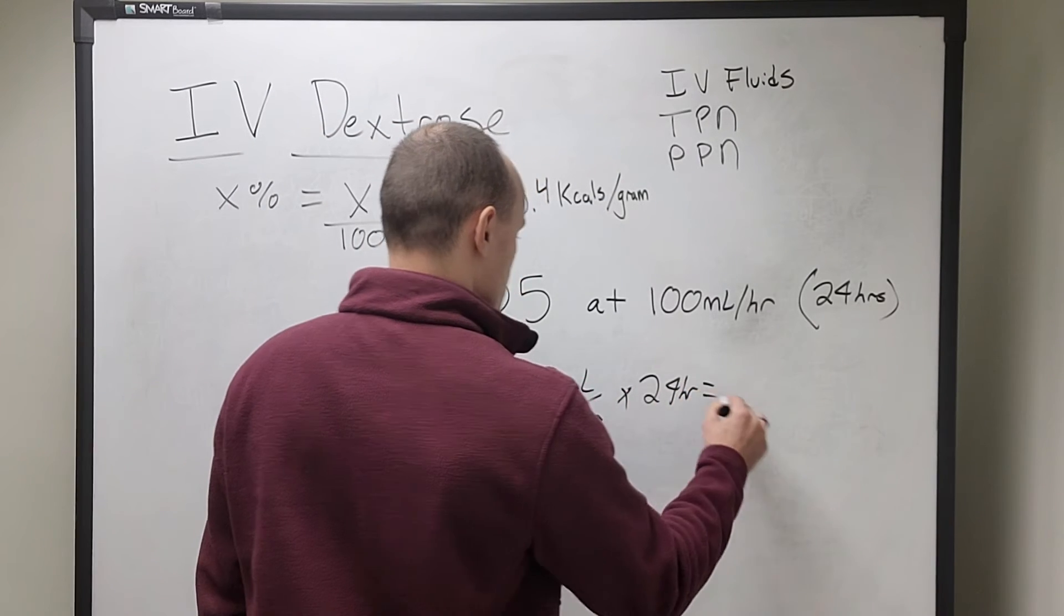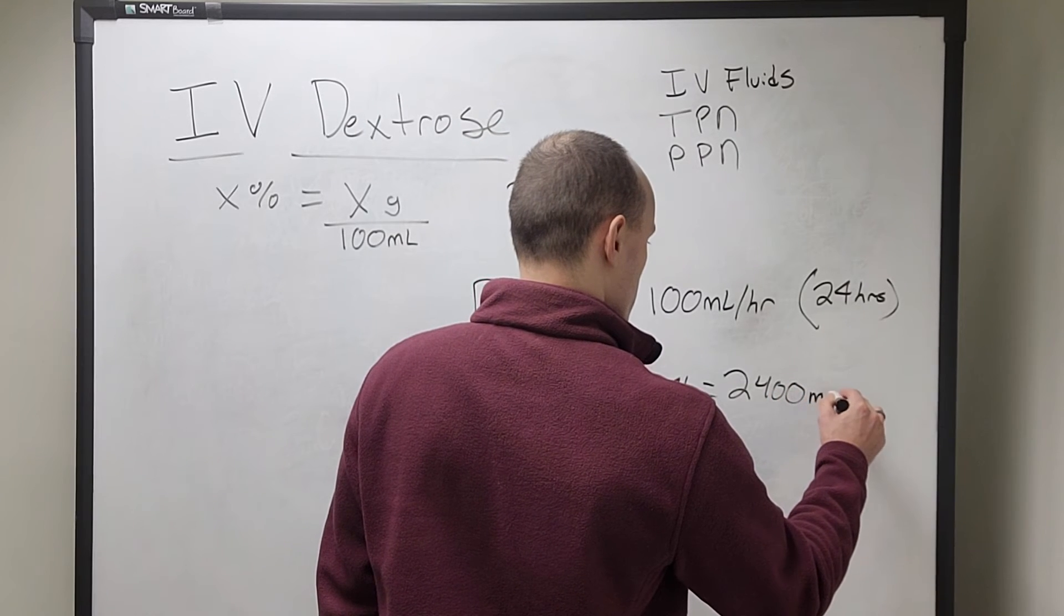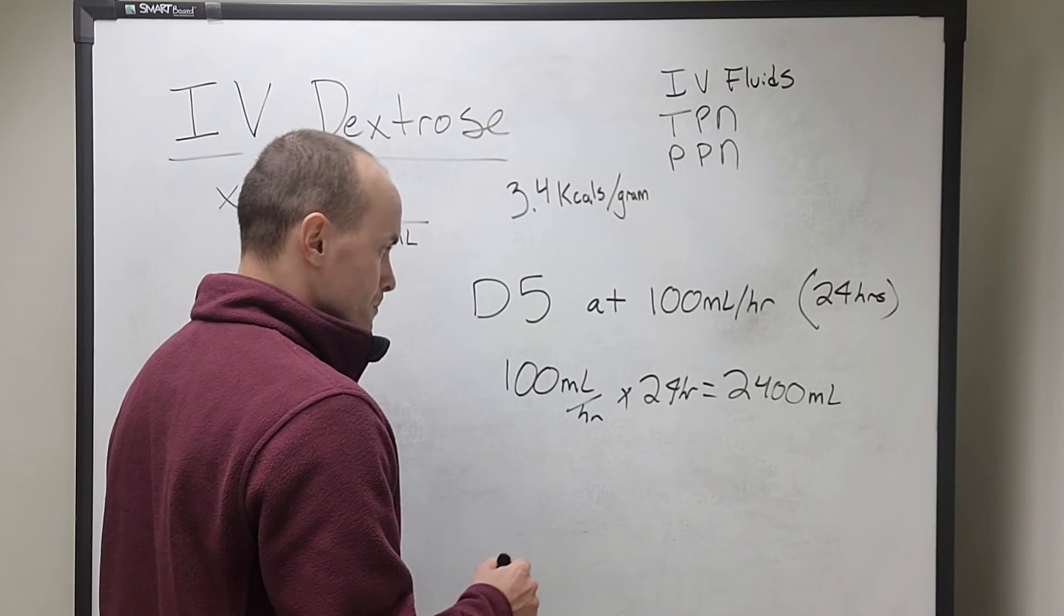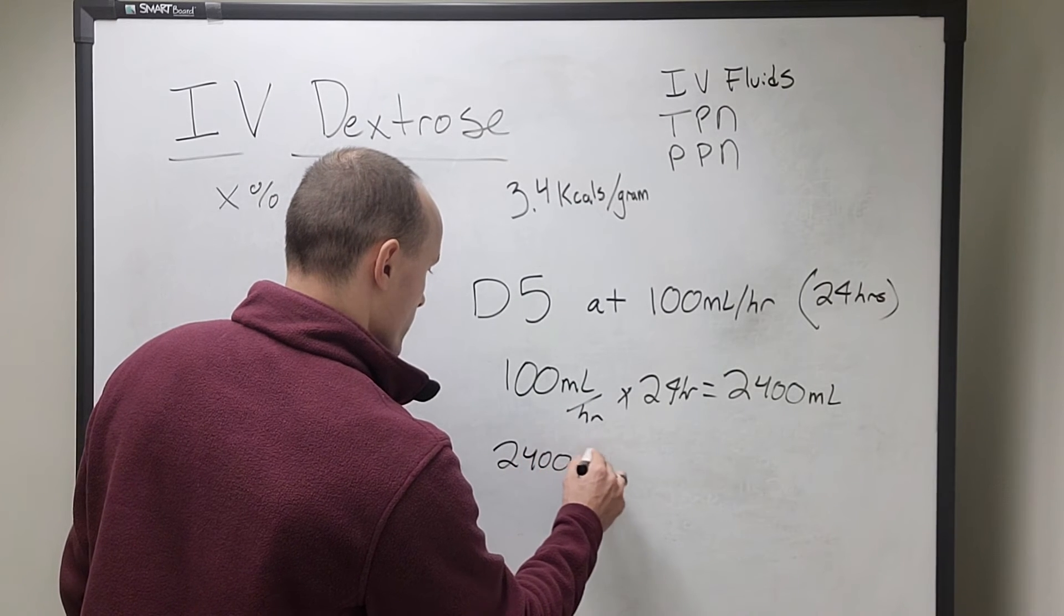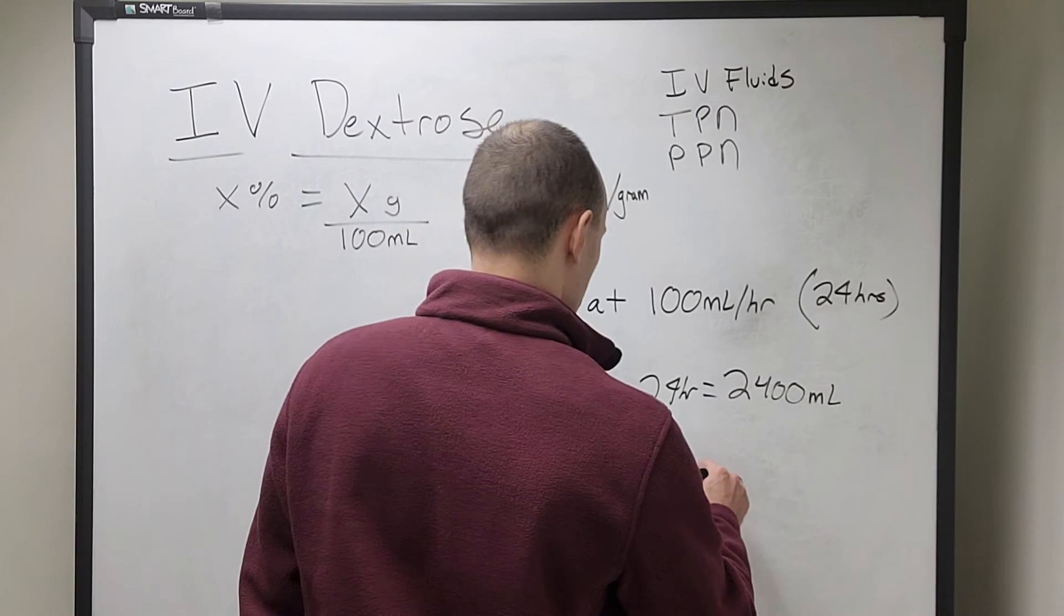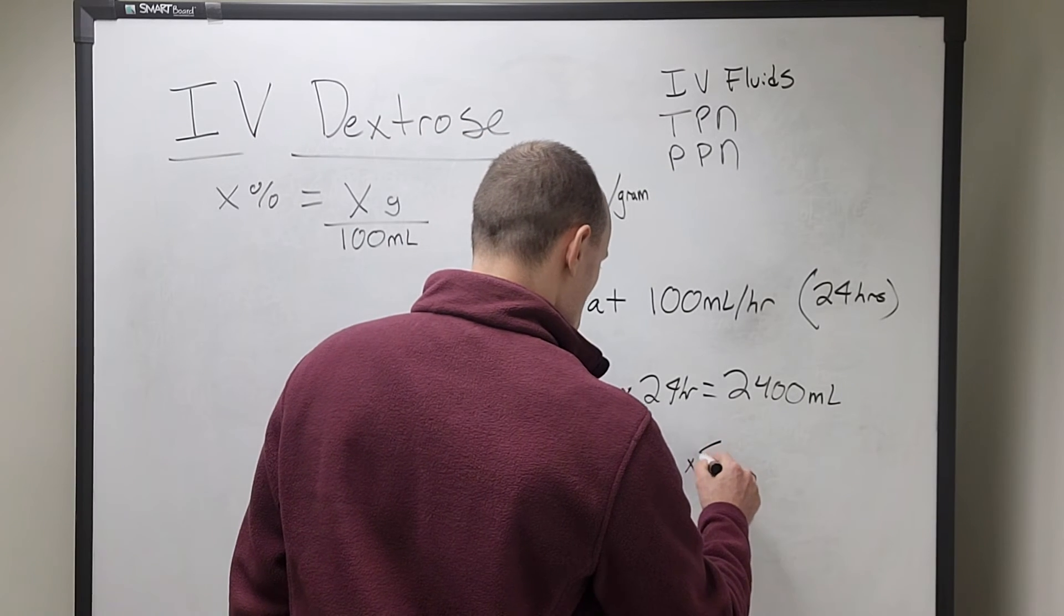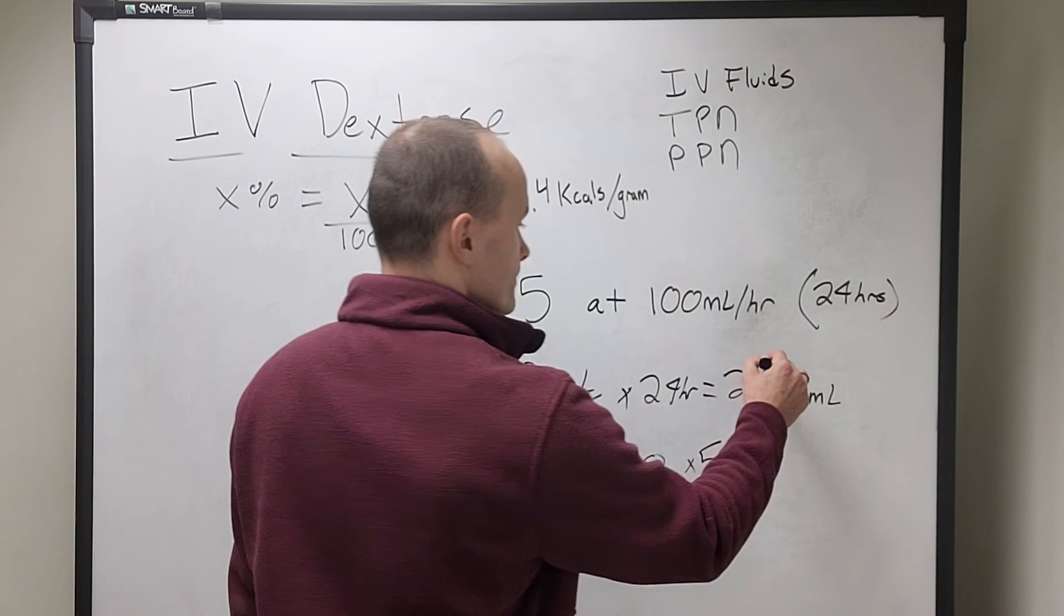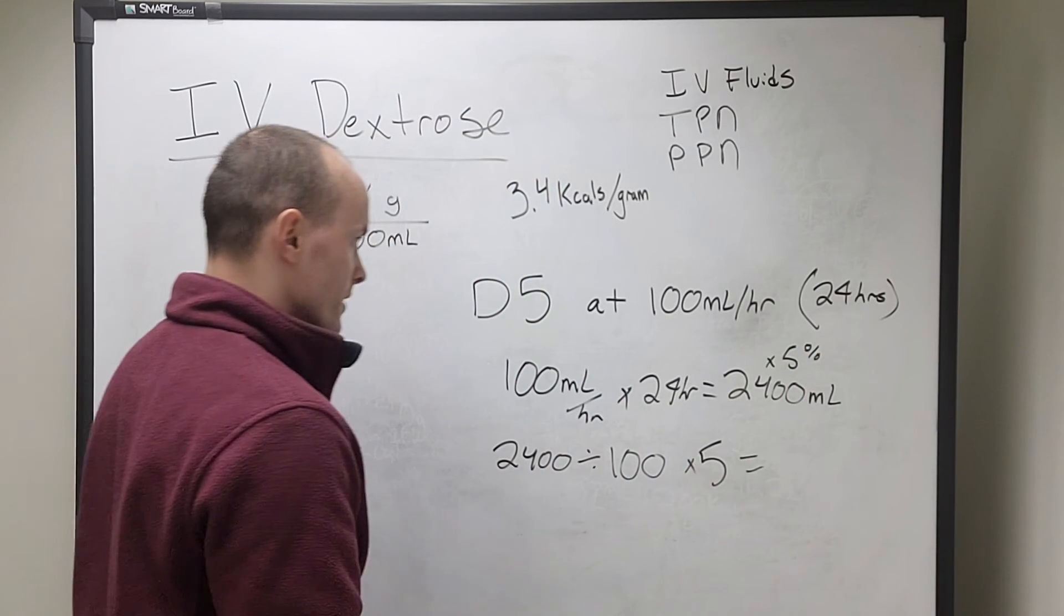So what we're going to do is we're going to take our rate, 100 mils per hour, times the runtime, 24 hours, which is going to give us 2400 mils. And then we take this 2400 mils and we're going to divide by 100 and multiply by the 5, or you can just multiply this by 5 percent. That's fine too.